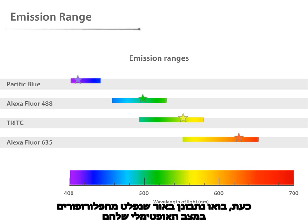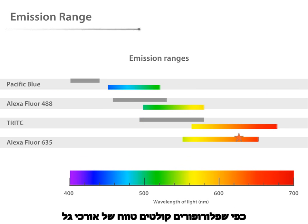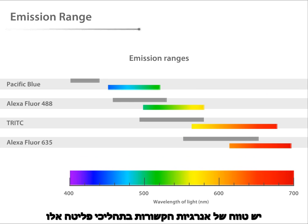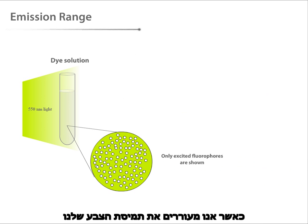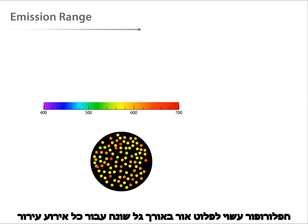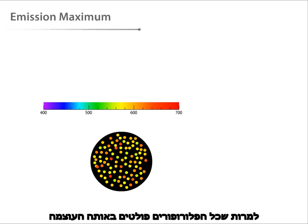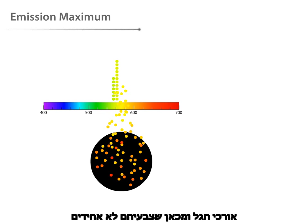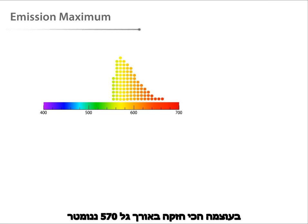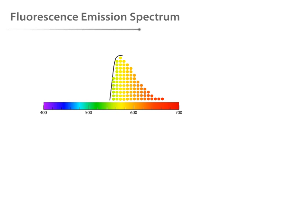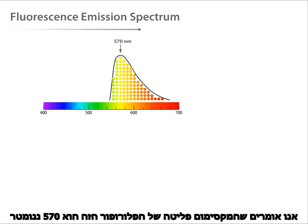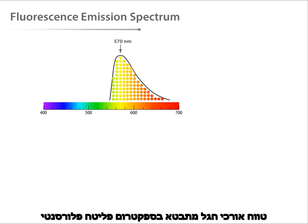Now let's look at the light that is emitted by the fluorophore molecules when they are excited at the optimal excitation wavelength. Just as fluorophore molecules absorb a range of wavelengths, they also emit a range of wavelengths. There is a spectrum of energy changes associated with these emission events. When we excite the dye solution at its excitation maximum of 550 nanometers, light is emitted over a range of wavelengths. A molecule may emit at a different wavelength with each excitation event, but each emission will be within the range. The population fluoresces most intensely at 570 nanometers, so the emission maximum of this fluorophore is 570 nanometers. The range of wavelengths is represented by the fluorescence emission spectrum.